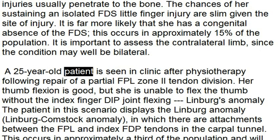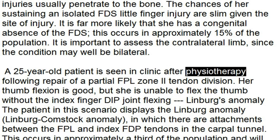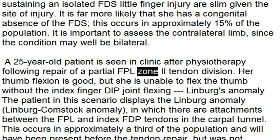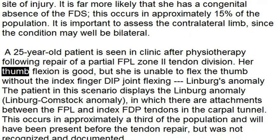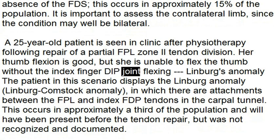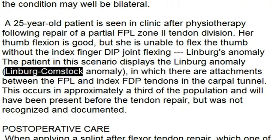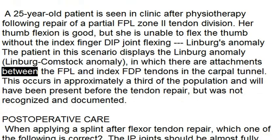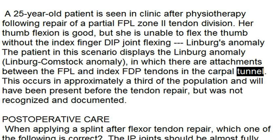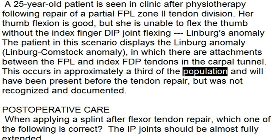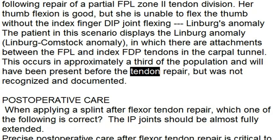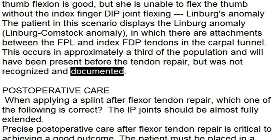A 25-year-old patient is seen in clinic after physiotherapy following repair of a partial FPL Zone 2 tendon division. Her thumb flexion is good, but she is unable to flex the thumb without the index finger DIP joint flexing — Linburg-Comstock anomaly. This anomaly involves attachments between the FPL and index FDP tendons in the carpal tunnel, occurring in approximately a third of the population. This would have been present before the tendon repair but was not recognized and documented.